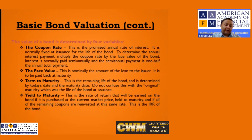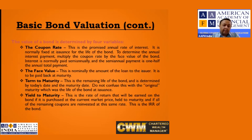The IRR of the bond has two elements. One is the capital gain — for example, a bond with a face value of 100 that you can buy at 85 rupees gives you a 15-rupee capital gain at maturity. You add that to the regular income return from coupons, and the resulting return you get is the YTM.